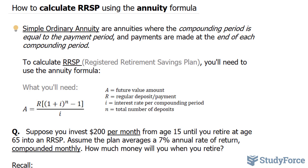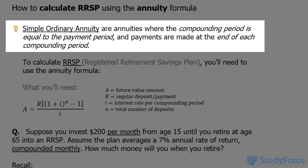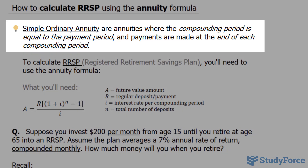In this video, I'll show you how to calculate RRSP using the annuity formula. Let's start off with an important definition. Simple ordinary annuities are annuities where the compounding period is equal to the payment period, and payments are made at the end of each compounding period.